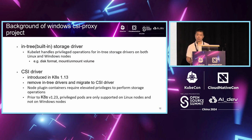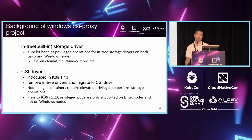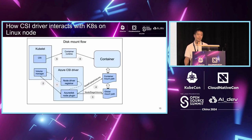Starting from Kubernetes 1.13, a CSI driver interface was introduced and we started the journey to remove the in-tree drivers and migrate to CSI drivers. The node plugin containers running inside the CSI driver pod require elevated privileges to perform storage operations. However, prior to Kubernetes 1.23, privileged pods were only supported on Linux nodes and not supported on Windows nodes. That's the reason why we needed the CSI proxy in the beginning.